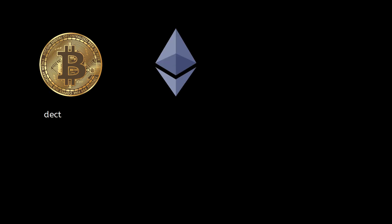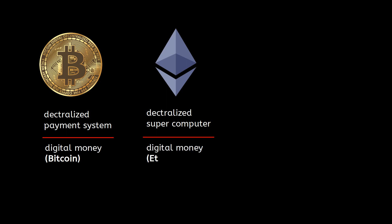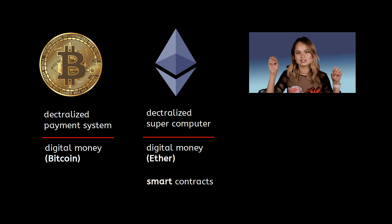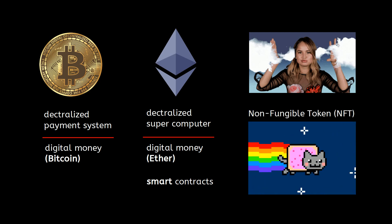Bitcoin is a decentralized payment system to just transfer digital money, i.e., Bitcoin. Ethereum is a platform — or to put it simply, a decentralized supercomputer — that not only can be used to transfer digital money, called Ether in the case of Ethereum, but also manages smart contracts. Ethereum opened a new realm of possibilities, which is actually mind-blowing. One interesting example is non-fungible tokens, or NFTs. I also have a video on NFTs if you're interested to know more.